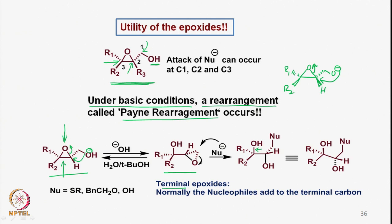After the Payne rearrangement, the epoxide has become the terminal epoxide, which is sterically less hindered compared to the original epoxide. If you look at the reactivity: in the original epoxide, both carbons of the epoxide ring are sterically hindered, whereas in the terminal epoxide one carbon is more hindered and the other is less hindered. Therefore, the nucleophile can attack onto the less hindered carbon. In this particular case the nucleophile is OH-minus, which attacks at the terminal end, opening the epoxide to form the OH group.